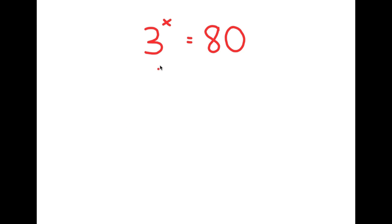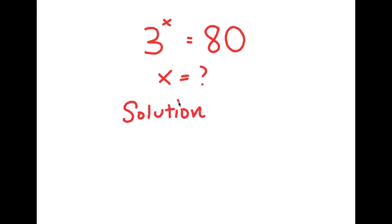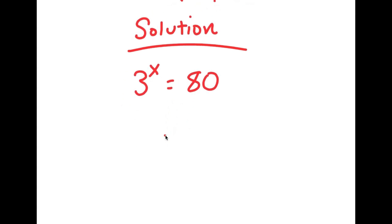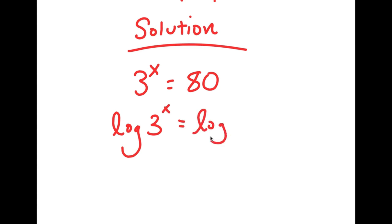In this problem, I have 3 to the power of x is equal to 80. I want to find the value of x. For my solution, I first start with 3 to the power of x is equal to 80, and now I'm going to take the log on both sides. So I get log 3 to the power of x is equal to log 80.